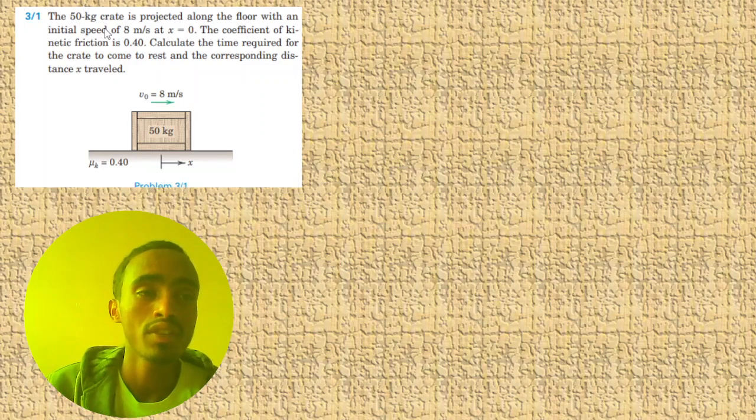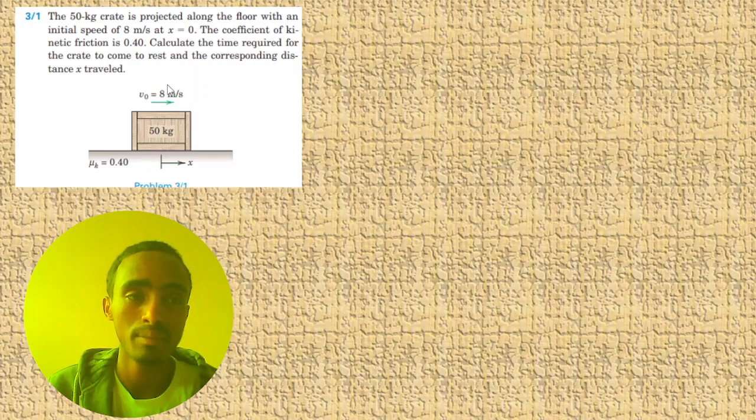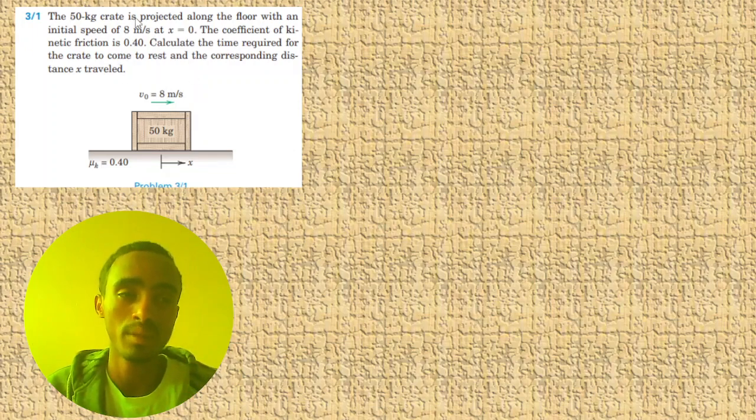The 15 kilogram crate is projected along the floor with an initial speed of 8 meters per second at x equals zero. The coefficient of kinetic friction is given as 0.4.